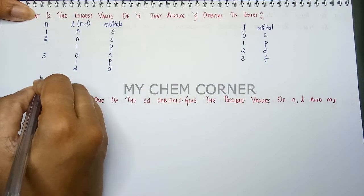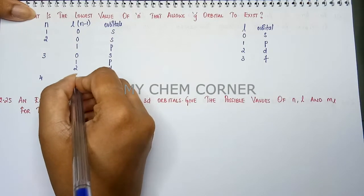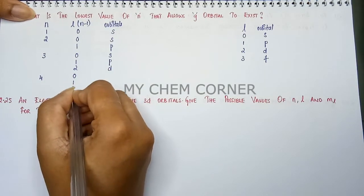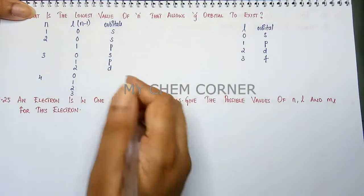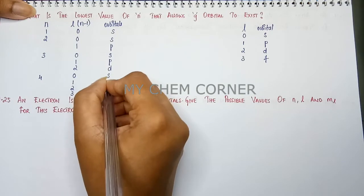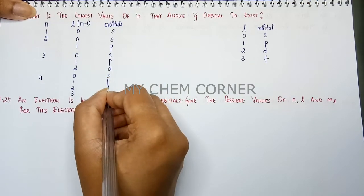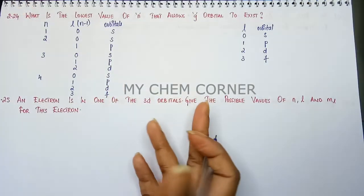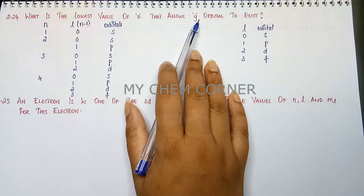Then you move to 4, n equals 4 value. In this case you get 4 numbers: 0, 1, 2 and 3. Now when l equals 0 you get s. l equals 1 you get p. l equals 2 you get d and l equals 3 you get f. So so far we have only reached to s p d f orbitals. We haven't yet reached the g orbital.